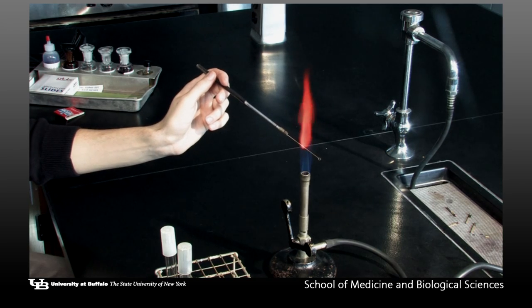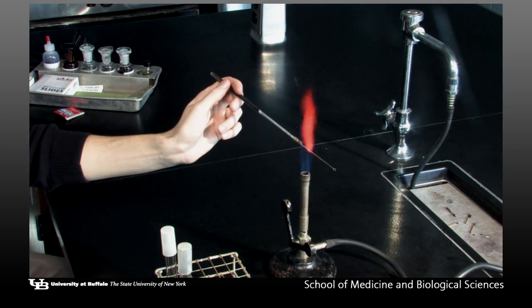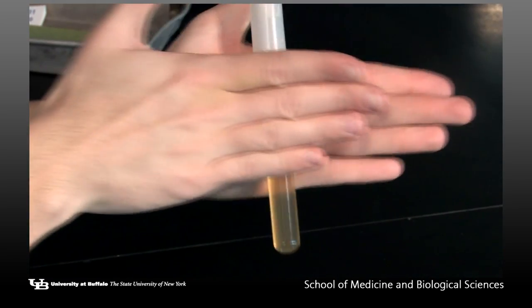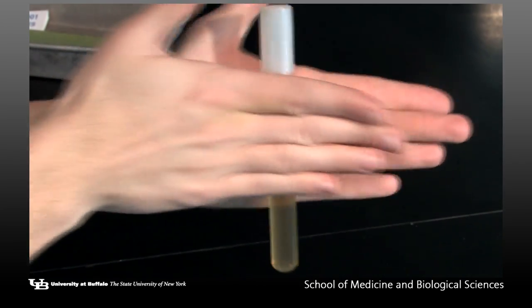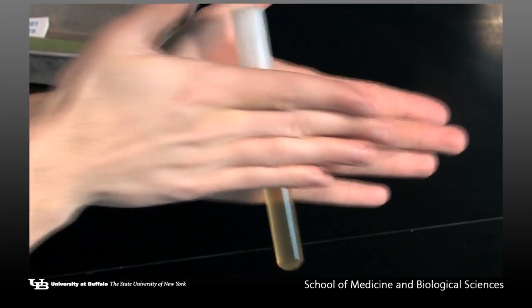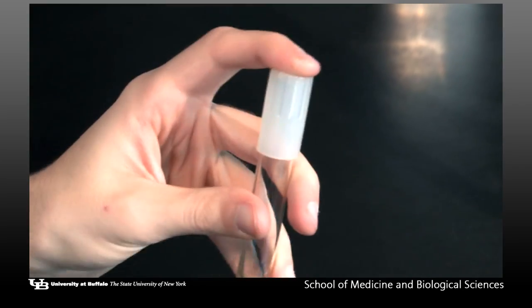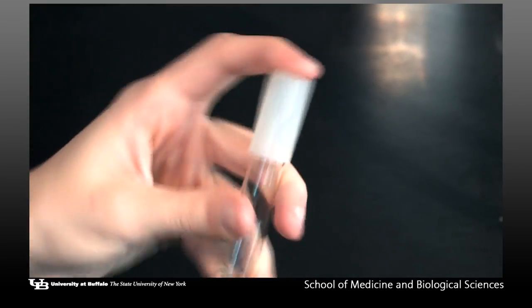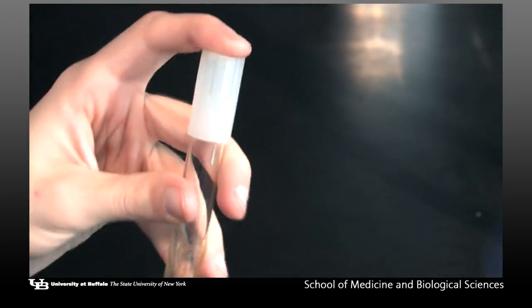First, sterilize the inoculating loop. Then, gently mix the culture containing the bacteria by rolling the tube between the palms of your hands or by shaking the tube with one finger holding the cap in place.